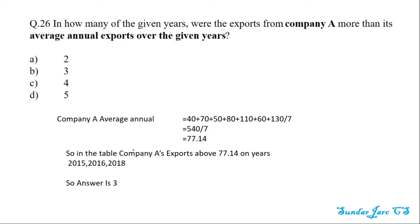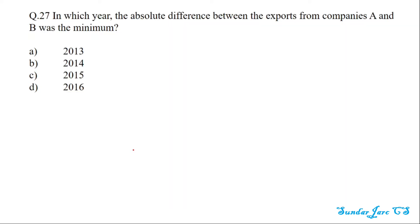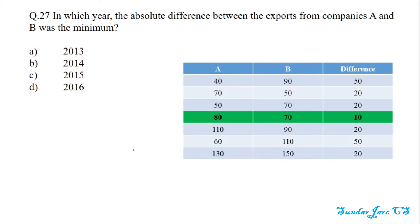Since exports exceeded the average in three years, the answer to Q26 is three. For Q27 — in which year was the absolute difference between exports from Company A and Company B minimum — the absolute differences were calculated, and the minimum difference is 10 in the year 2015. So the answer is 2015.